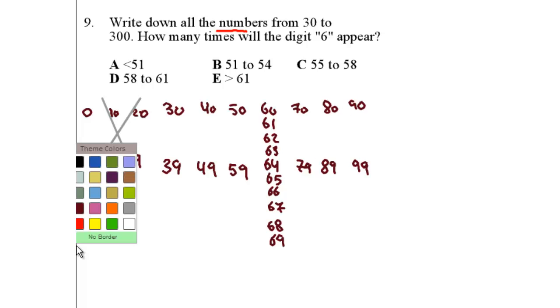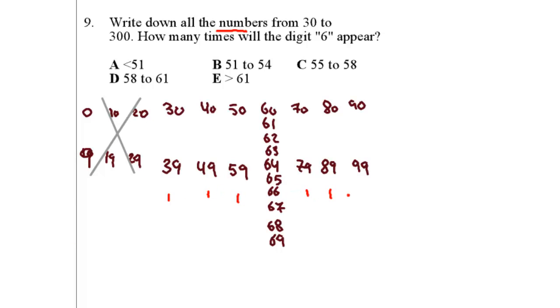Now let's see how many 6's we have. From 30 to 39 we have 1, 40 to 49, 1, 50 to 59, 1. Same here. 70, 80, and 90 also have 1's. Now let's count the 6's in 60 to 69. We have 1, 2, 3, 4, 5, 6, 7, 8, two 6's, 9, 10, 11. So we have 11 6's.